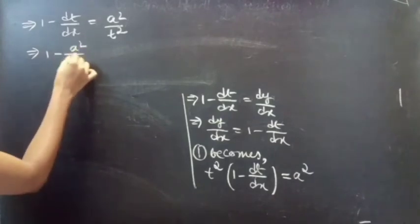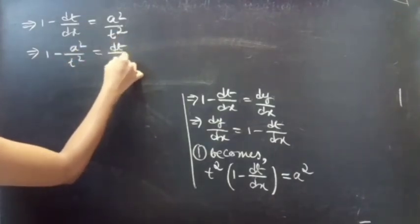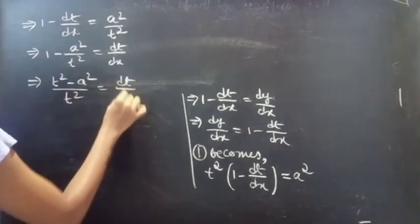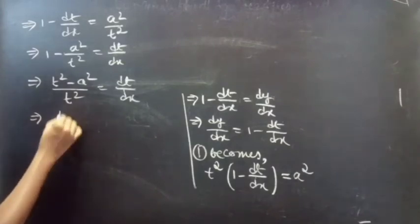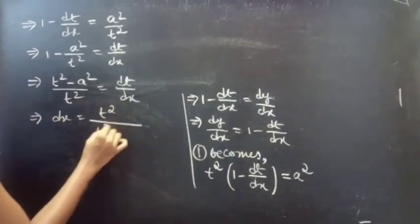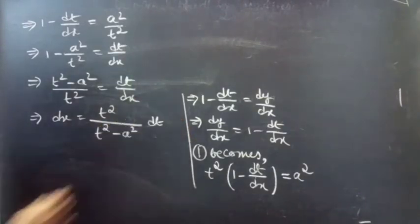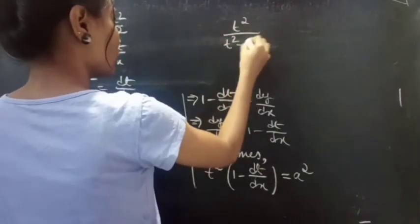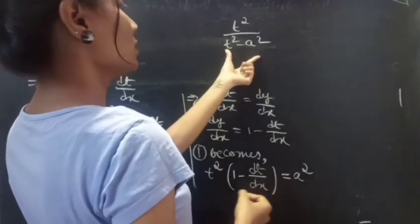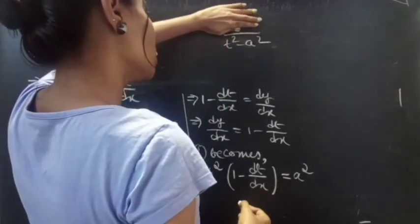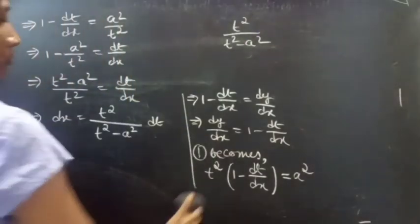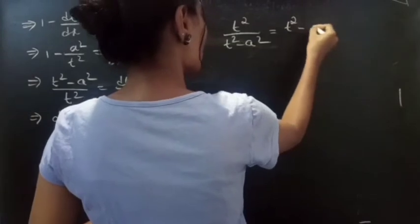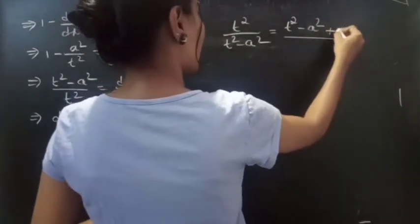This becomes dt/dx equals to 1 minus a square by t square. Then dx equals to t square by (t square minus a square) into dt. So here you are having t square in the numerator and t square minus a square in the denominator. We will change the numerator in terms of t square minus a square by subtracting and adding a square.